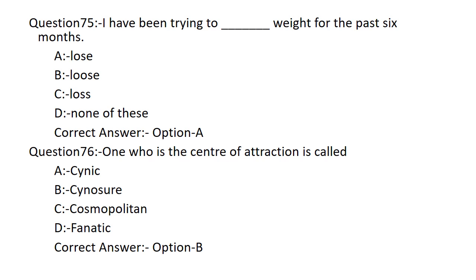I have been trying to dash wait for the past six months. Option A: LOSS. Option B: LOSS. Option C: LOSS. Option D: None of these. Option A is the correct answer — LOSE. I have been trying to LOSE weight for the past six months.